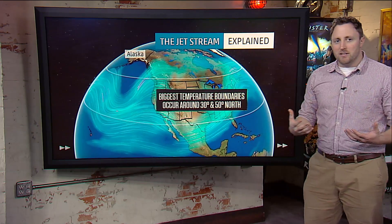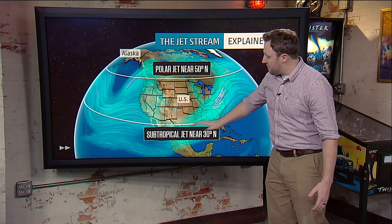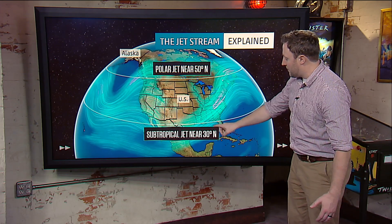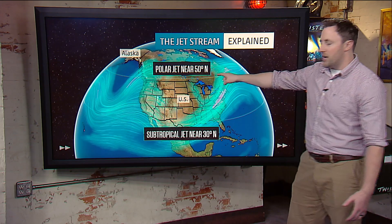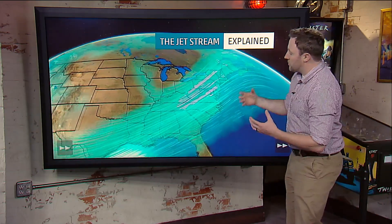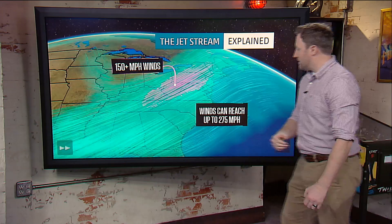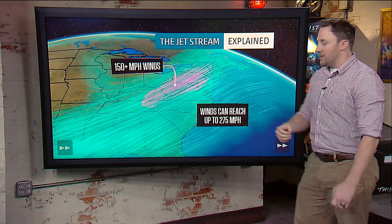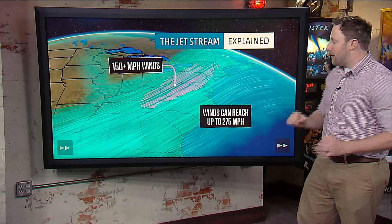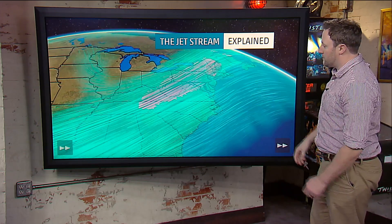The biggest differences in these temperatures generally happen between 30 degrees and 50 degrees. That's where you have the subtropical jet at 30 degrees north and the polar jet near 50 degrees north. You'll get these really fast winds of 150 miles per hour, and some areas can even reach up to 275 miles per hour — really strong winds in the core of some of those jet streams.